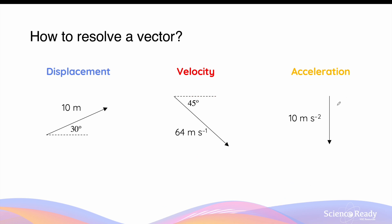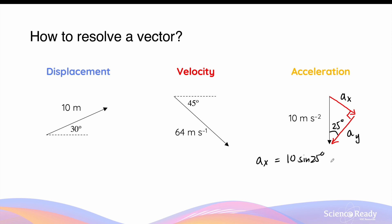Not all vectors must be resolved into horizontal and vertical components. As long as the components are perpendicular to one another, the resolution of the vector is correct. In this case, the acceleration vector is going down at 10 meters per second squared. When we resolve this vector into two perpendicular components, they are not horizontal nor vertical, yet they form a right angle between them. So if this angle here is 25 degrees, then we can call this Ay and this component Ax. Ax is the opposite side to the angle, so this is equal to 10 sine 25 degrees, which is 4.23 meters per second squared. And Ay is the adjacent side to the angle, so this is equal to 10 cosine 25 degrees, which is 9.06 meters per second squared.